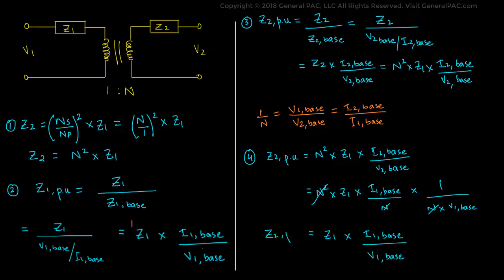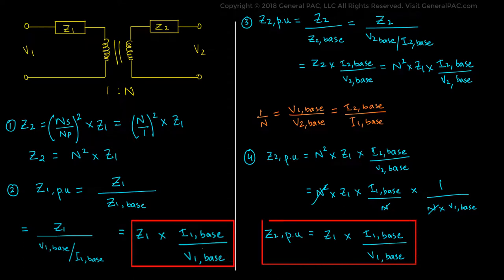Hence, we prove that the per unit impedance of primary and secondary side are equal in magnitude. This means that calculating per unit impedances of either side is enough to analyze a transformer.